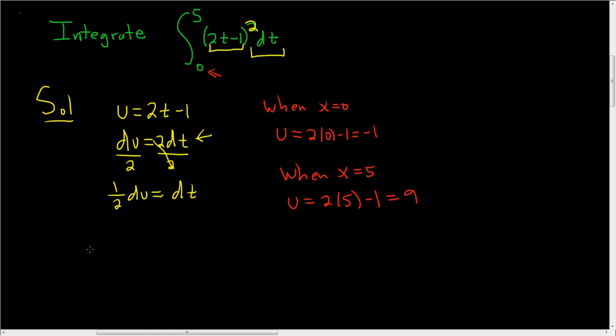All right. And then it looks like we're ready to make the u substitution. So the 1 half, we're going to pull it out. So 1 half, and then here we have u squared du negative 1 to 9.